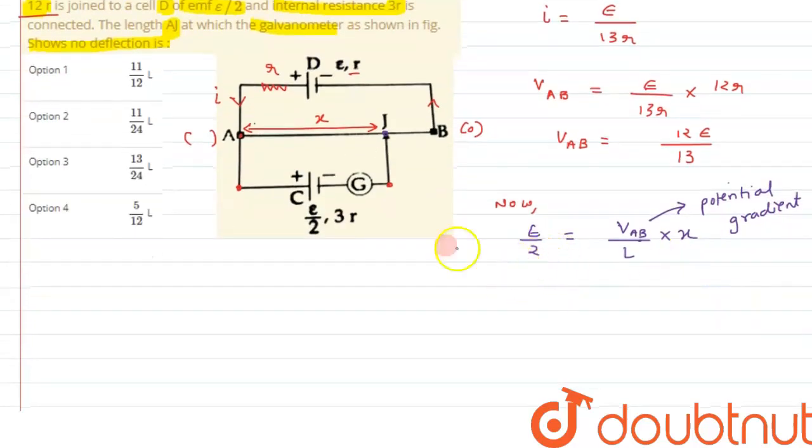This is how we can say the potential across both of these are same, so we are just equating it. Potential across AJ will be V by L into x. From here we have calculated V_AB, so it is 12 epsilon by 13L into x equals epsilon by 2. Epsilon gets cancelled out, so we are left with 13 by 24 into L. This is what the value of x we are getting, or the balancing length we are getting. So this matches with option C.